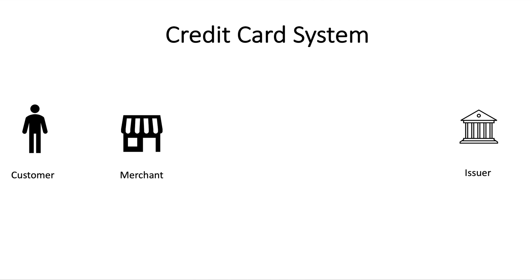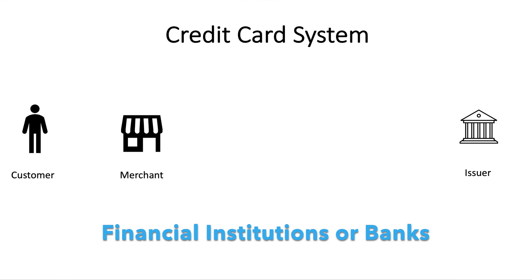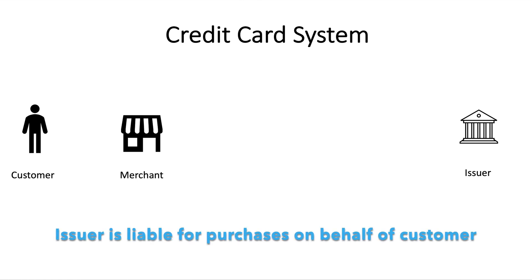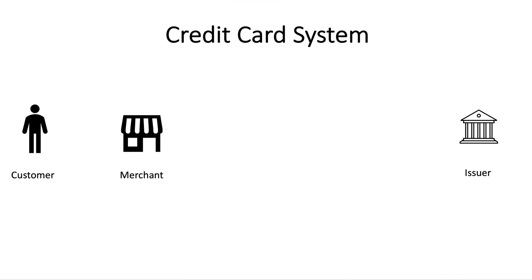The third actor is the issuer or issuing bank. Card issuers are the financial institutions or banks that distribute credit cards to consumers — they are essentially the customer's bank. An issuing bank transfers money for purchases to the acquiring bank and is liable for purchases made by the customer if the customer does not pay. The fourth actor is the acquirer or acquiring bank.